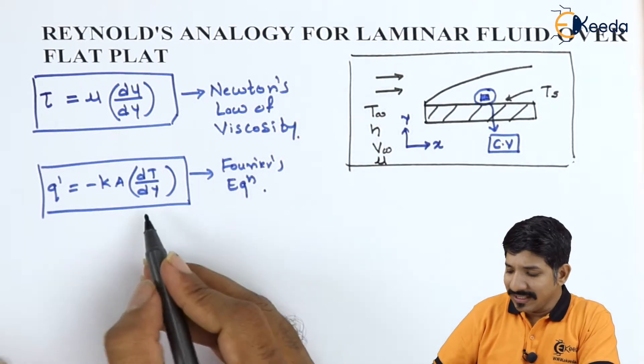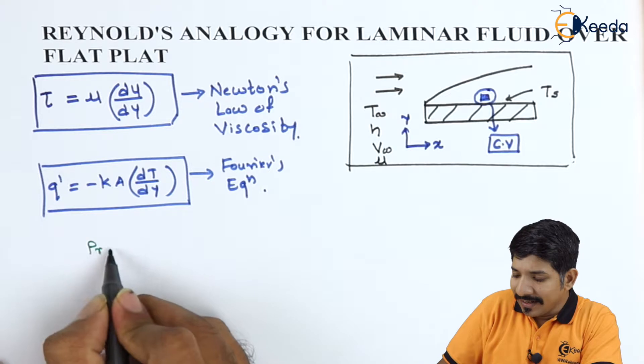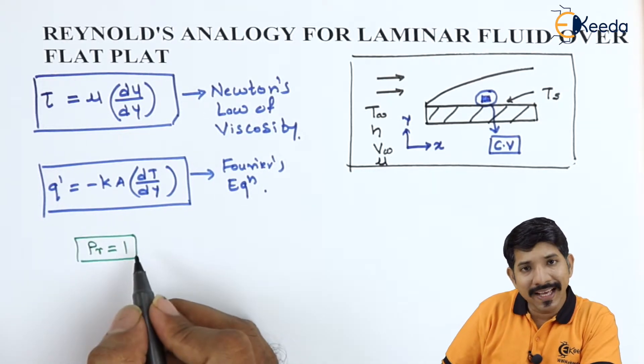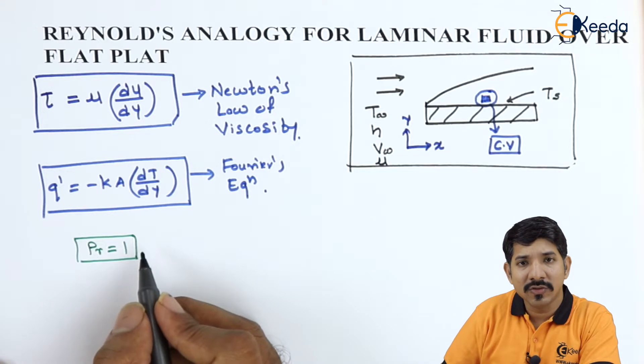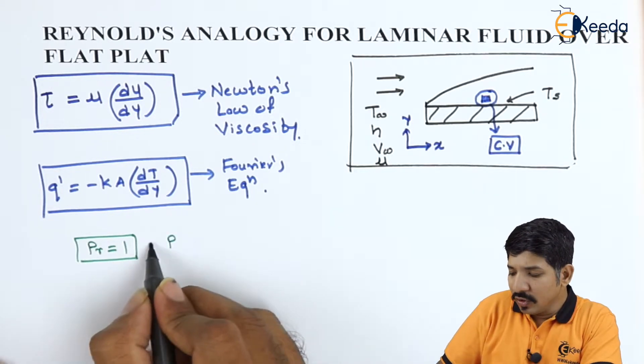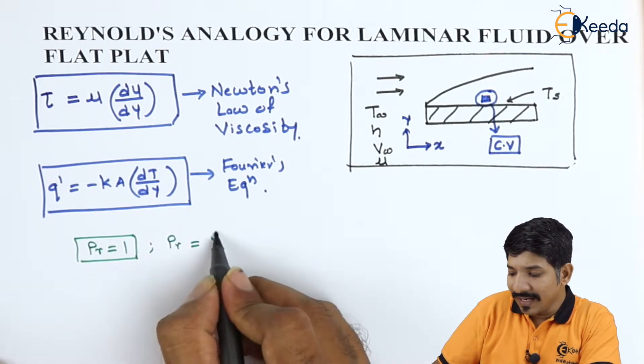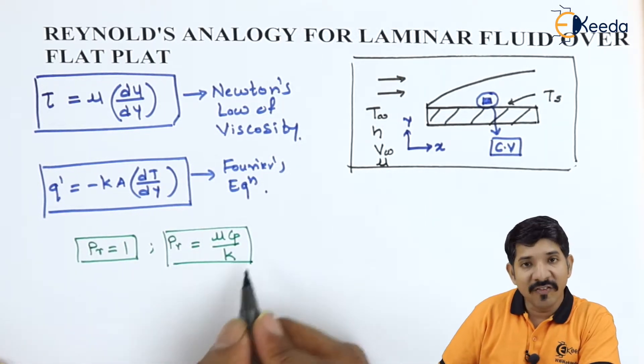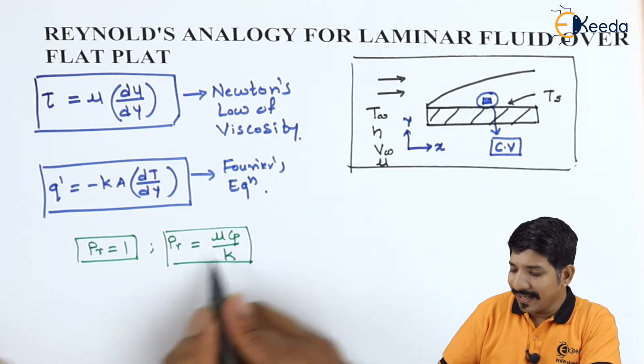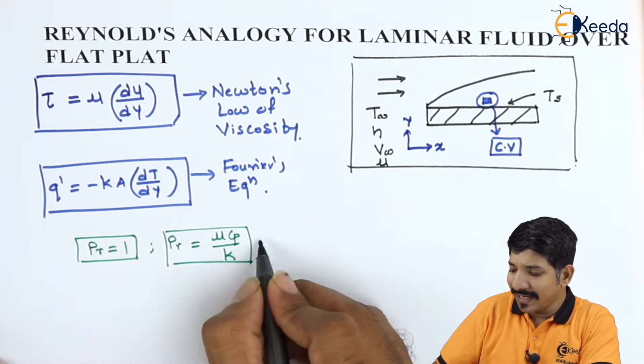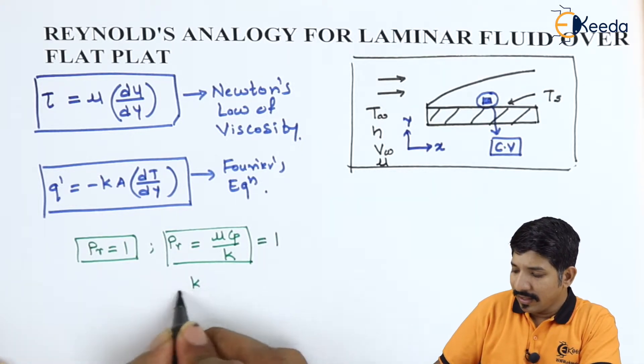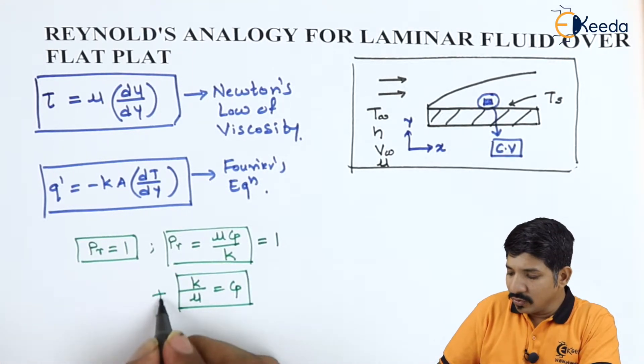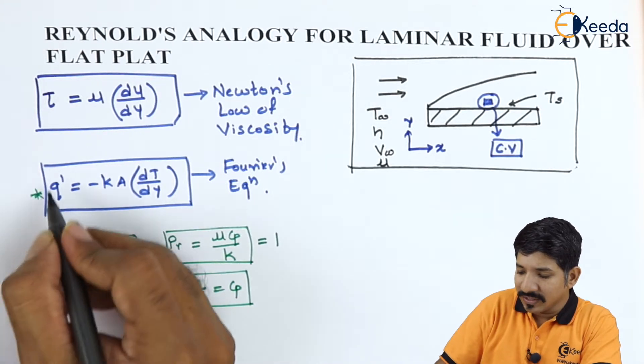Then what do we know? Reynolds analogy is specifically given for the Prandtl number as 1. So this is only applicable for a case where my Prandtl number is unity. And what do we know about the Prandtl number? It is given as mu Cp upon k. If my Prandtl number is 1, then I can rearrange the terms and write k by mu as Cp.